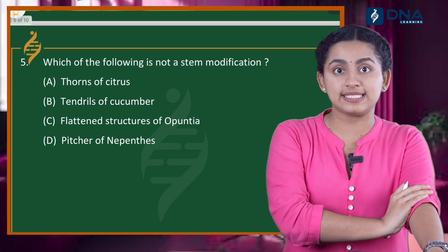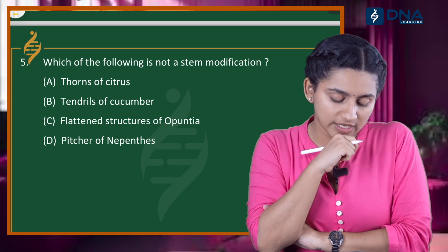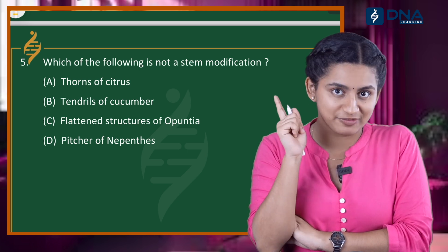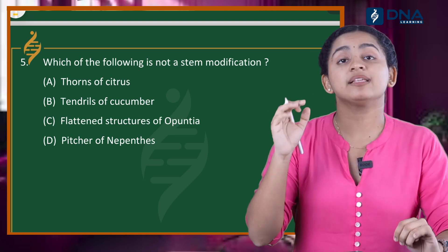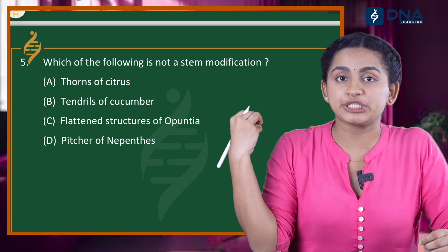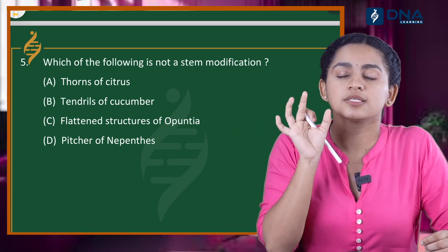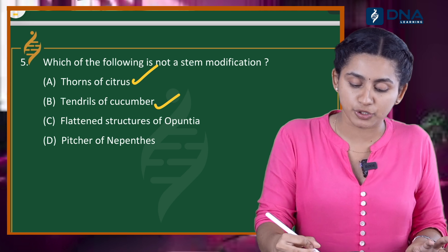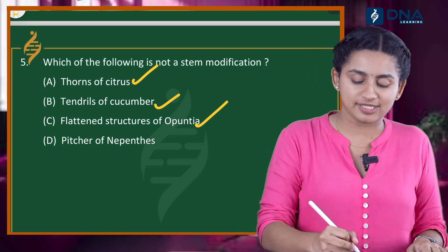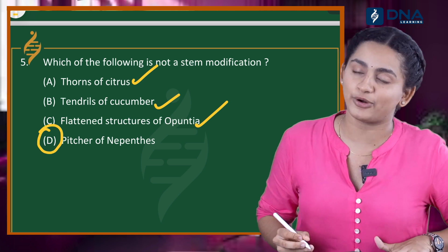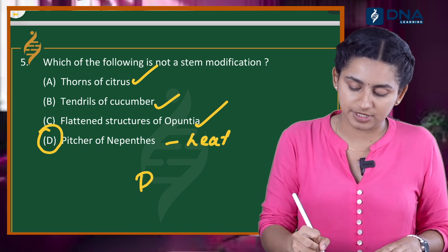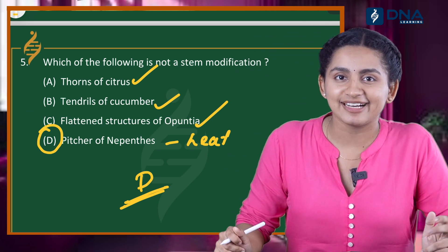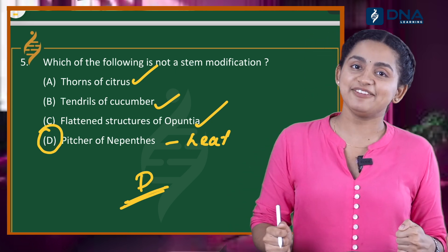Question number 5: Which of the following is NOT a stem modification? Option A: thorns of citrus. Option B: tendrils of cucumber. Option C: flattened structure (phylloclades, from question 1). Option D: pitcher of Nepenthes. Thorns of citrus, tendrils of cucumber, and phylloclades are all stem modifications. The pitcher of Nepenthes is a leaf modification. So our right answer is Option D.